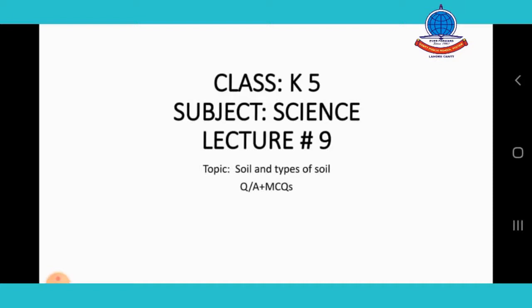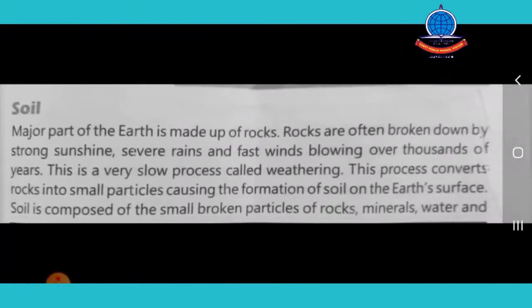Today's topic is soil and types of soil. A major part of the earth is made up of rocks. Rocks are often broken down by strong sunshine and fast winds blowing over thousands of years. This is a very slow process called weathering, which converts rocks into small particles, causing the formation of soil on the earth's surface.